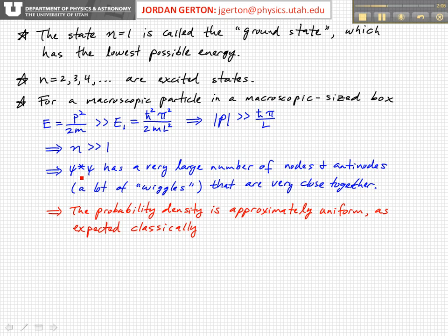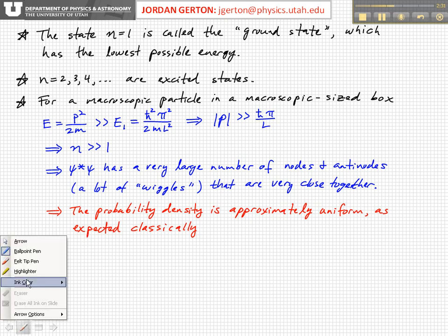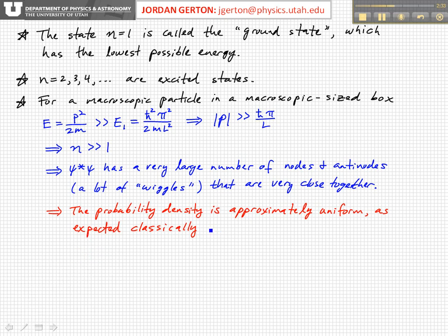Those antinodes are very, very close together and the probability density is approximately uniform, because if the distance between the antinodes is much smaller than what can be measured or detected, then you average out these nodes and antinodes — these wiggles — and it looks uniform, which agrees with the classical prediction. This is called the correspondence principle, and it's an important principle in quantum mechanics.